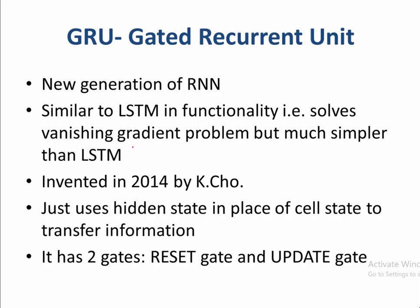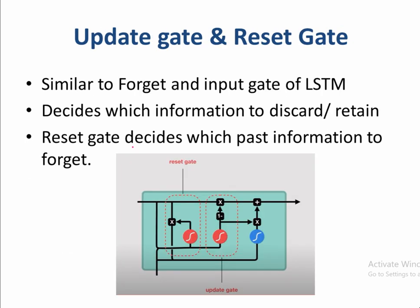GRU is a new generation of RNN similar to LSTM in functionality. It solves the vanishing gradient problem the same way as LSTM. It was invented in 2014 but is simpler in model compared to LSTM. It uses only the hidden state in place of a cell state to transfer information, and has only two gates: a reset gate and an update gate. The update gate and reset gate are similar to the forget gate and input gate of LSTM — they decide to discard or retain information, and the reset gate decides which information to forget.